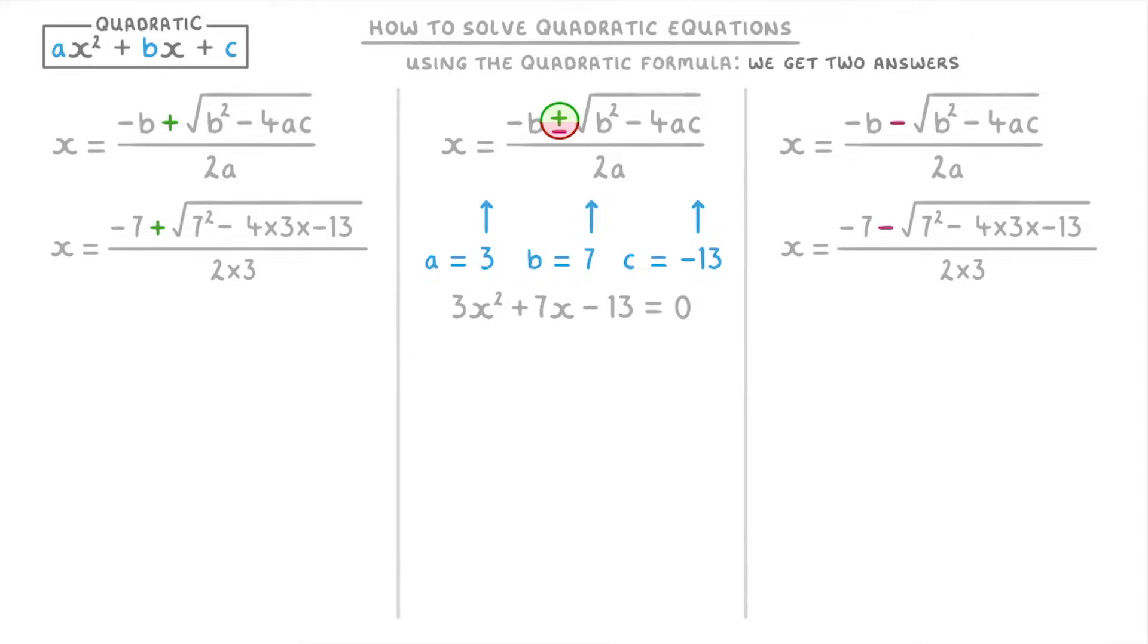If they ask for the solution to a certain number of decimal places, like give your answer to two decimal places, then you can just plug the whole thing straight into your calculator. Which for this one on the left would be 1.22 and for the one on the right would be -3.55.